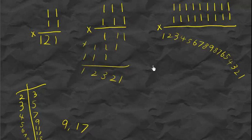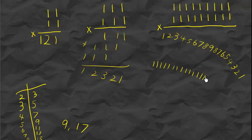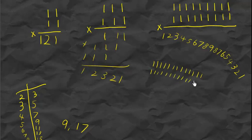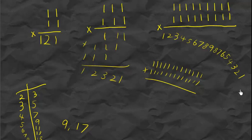Now I'm going to do thirteen ones times thirteen ones. Remember the pattern I did before, but thirteen is not a single digit, so for the multiplication I still do the pattern. Also eleven, twelve, and ten are not single digits either, so I have to do something about it by carrying.